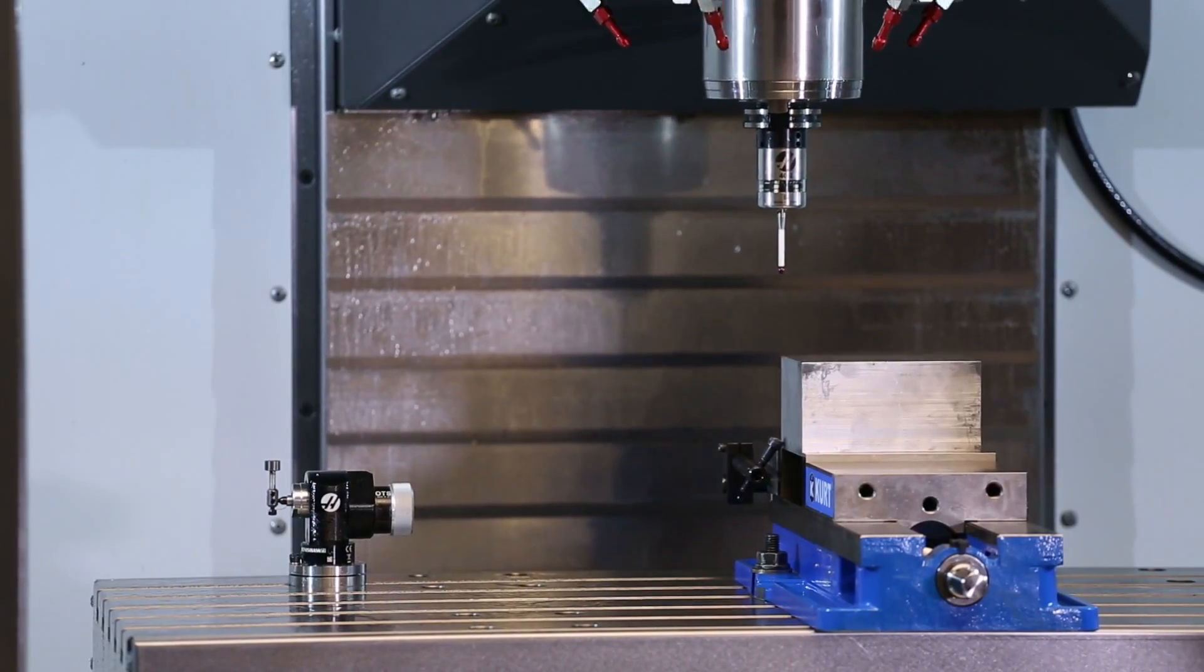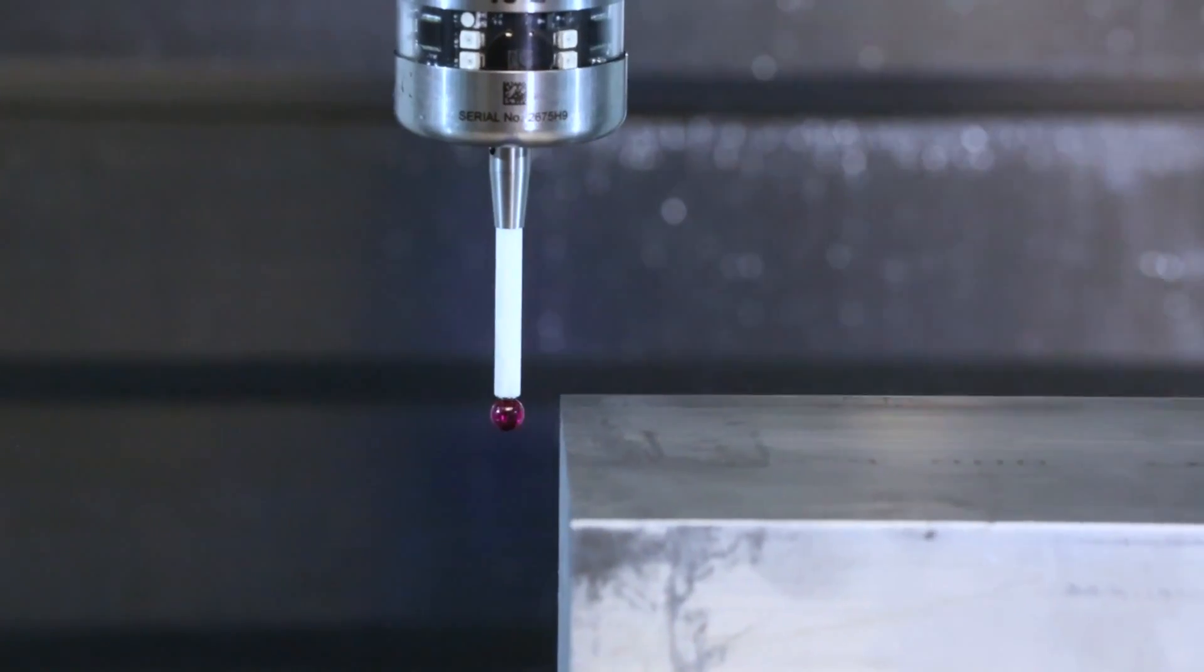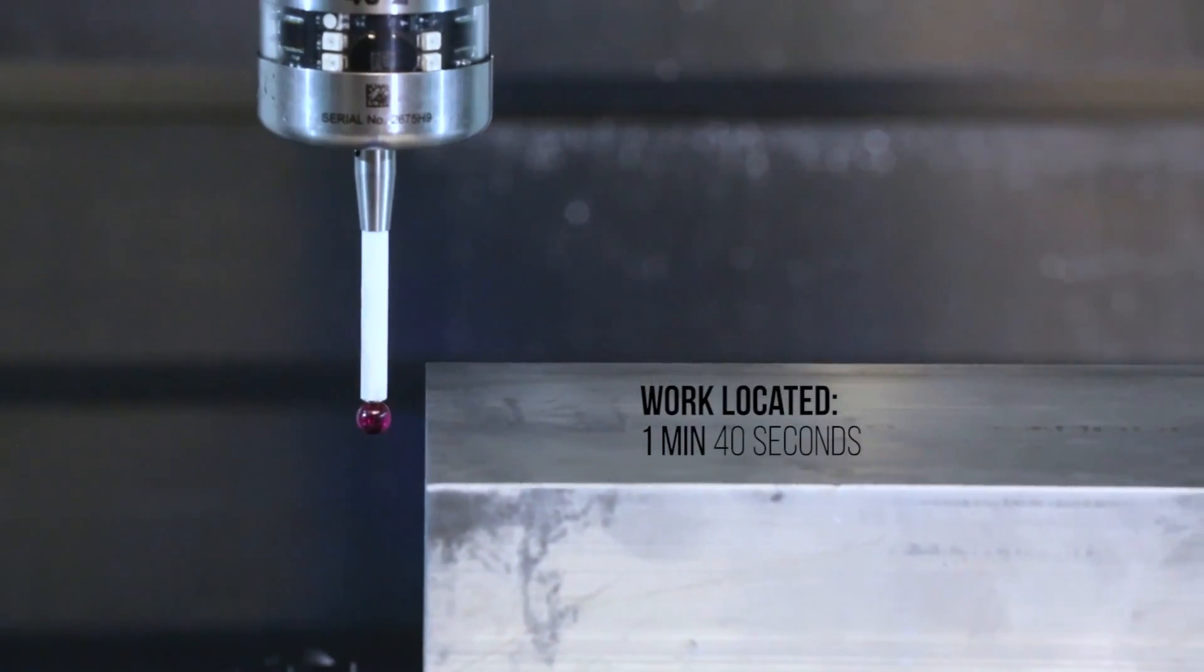Jog down to the part. Select the probing routine, and press cycle start. Work located in one minute and 40 seconds.